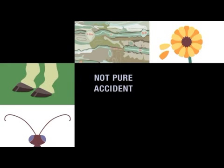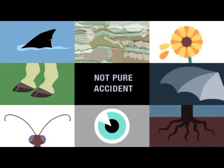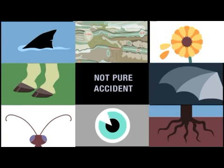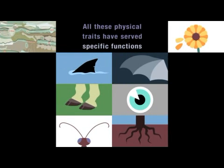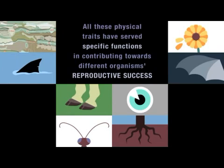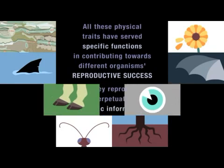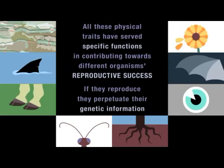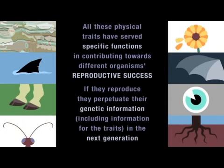Many who don't understand evolution try to discredit it by equating it with pure accident. But it's not pure accident that camouflage, hooves, petals, antennae, fins, wings, eyes and roots have evolved in the natural world. All these physical traits have served specific functions in contributing towards different organisms' reproductive success. And clearly, if the organisms that exhibit these traits manage to reproduce, they perpetuate their genetic information, including the information for the traits, in the next generation.